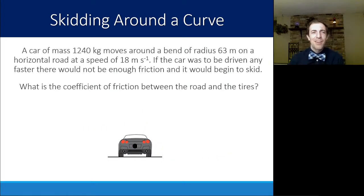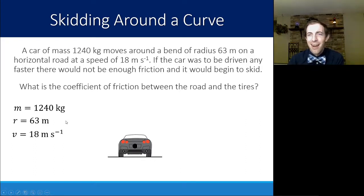So let's do this as an example. We have a car of mass 1,240 kilograms moving around a bend at a radius of 63 meters on a horizontal road at a speed of 18 meters per second. We can plug in those three values just for our understanding of what our variables are. If the car was to be driven any faster, there would be not enough friction and it would begin to skid, which means that it is being held there by a coefficient of static friction. Let's calculate what that coefficient of friction is between the road and the tires.